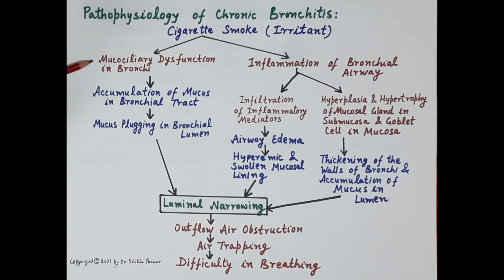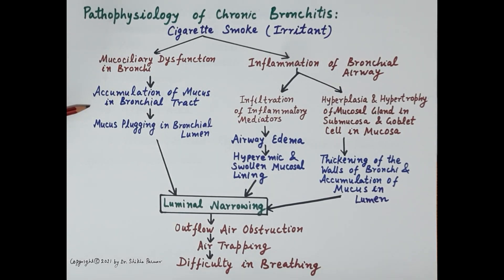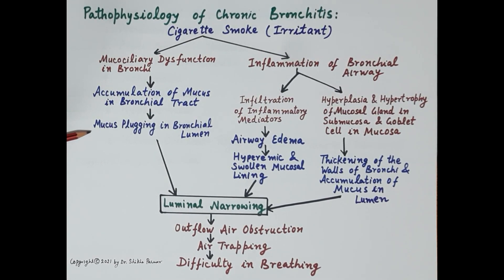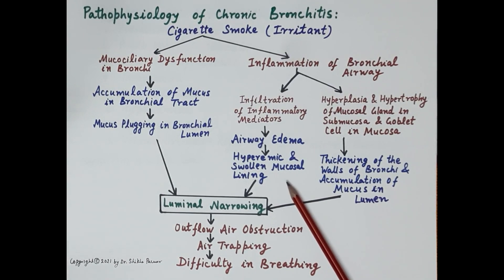On the other side, irritation by cigarette smoke causes mucociliary dysfunction in the bronchi. Because of this dysfunction, cilia are unable to clear the lumen or remove mucus from the bronchial tract. Therefore, there is accumulation of mucus, and this accumulated mucus forms a plug — resulting in mucus plugging in the bronchial lumen.